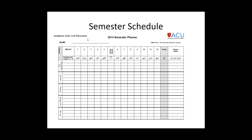Here's an example of a semester schedule. On the left-hand side you have class names: English Composition, American History, Physics, Biology 101, Biology Lab. It also shows your assignments, the weeks, when spring break is, when your finals are, and what your exam dates are.